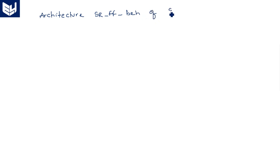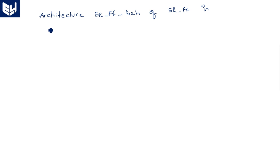Now coming to the architecture part. Architecture SR_flip_flop_behavioral of SR_flip_flop. Give the names clearly so that after seeing the name itself you understand which entity and which architecture style it belongs to — whether it is behavioral or data flow.